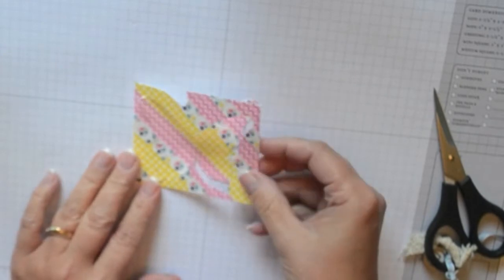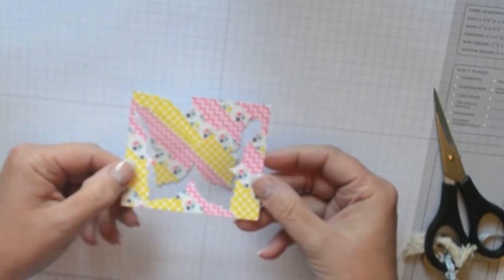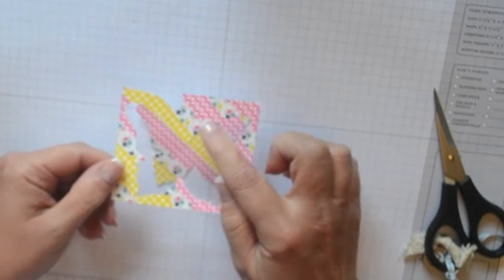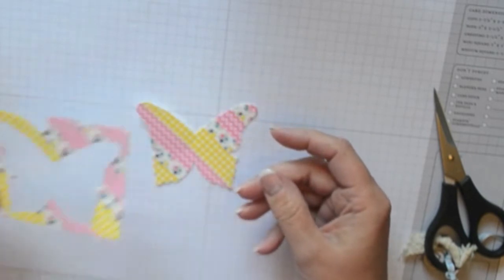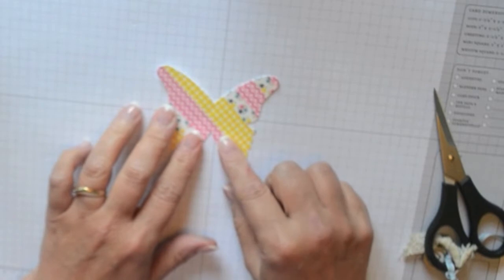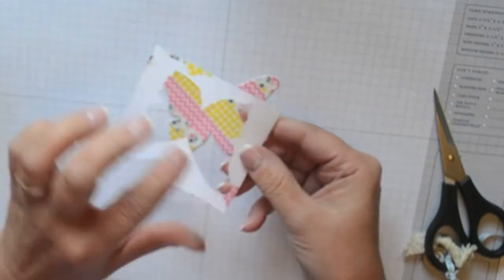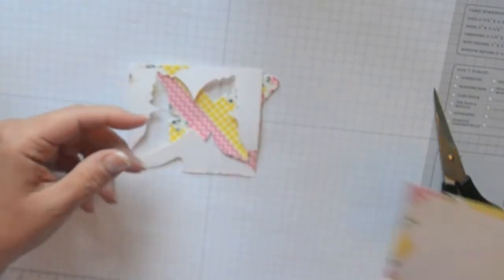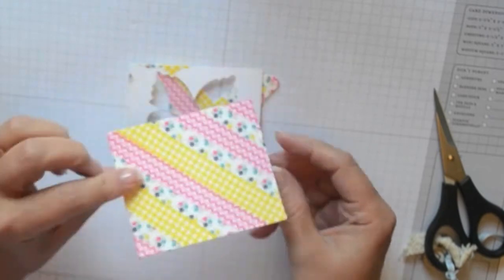So after you've done that you're going to see that your butterfly is just going to come out and that's the part that's wasted although I'm sure you could punch out things and use it on other projects. So that's what our little butterfly looks like with the washi tape on it. I meant to show you earlier that on the back of these pieces you can see where I've just folded over the excess tape.